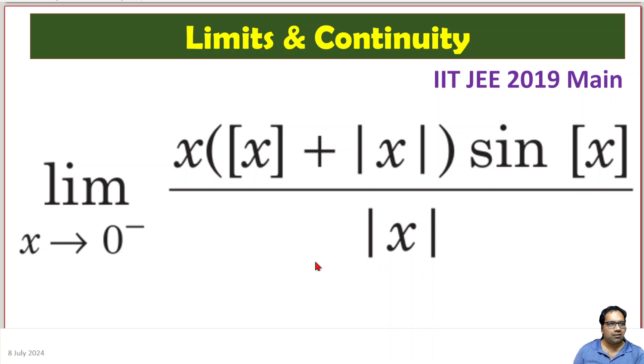Very basic thing: x is less than 0, x is like some -0.9 or -0.99 something. Then what happens to this greatest integer function of x? What happens to this absolute value of x and then basic simplification?